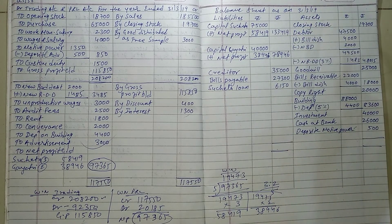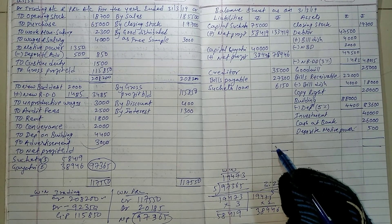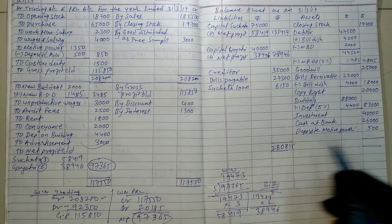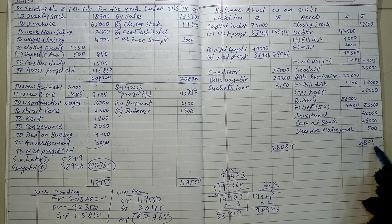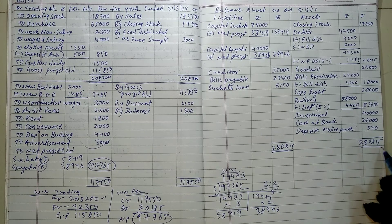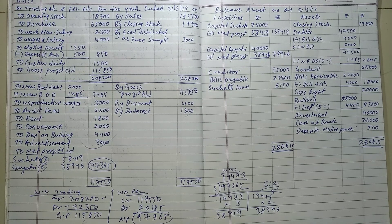After posting, we will close the accounts. We add liabilities and assets and the total is the same — 280,815 and 280,815. Tally! If you have any question or doubt, take a screenshot and check from the files. If the quality is not clear, you can view it in 480P quality on YouTube. Thank you, students.